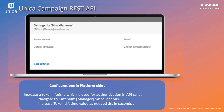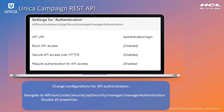The first configuration we need to perform is to increase the token lifetime in the platform. This token will be used as a validation token for every incoming API request. Next, change the configuration for the API authentication. Keep the configuration values as displayed on the screen.